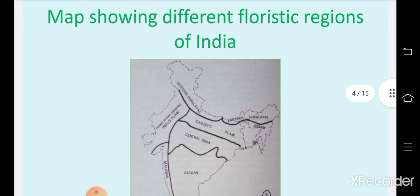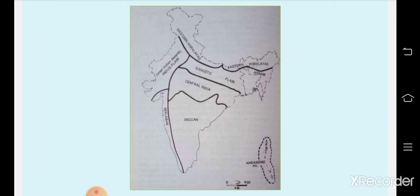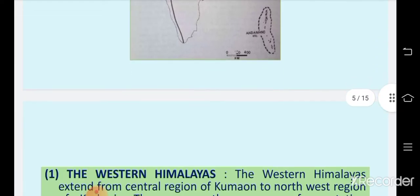Here you can see a map showing the different floristic regions of India. The nine regions visible in the picture are: western Himalayas, eastern Himalayas, Indus plain, Gangetic plain, central India, Deccan region, western coast or Malabar region, Assam region, and finally the islands of Andaman and Nicobar.